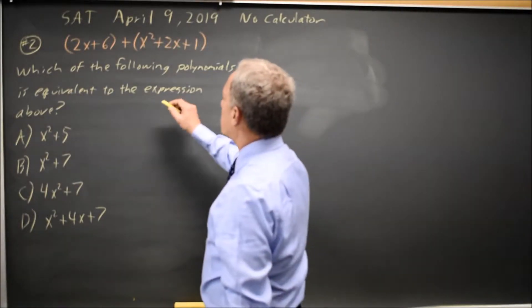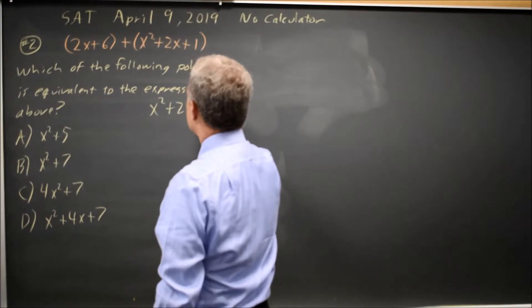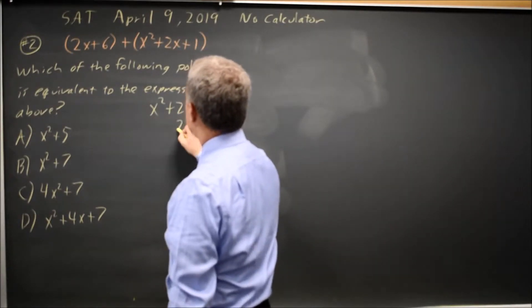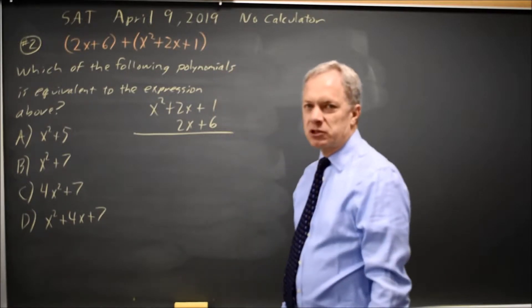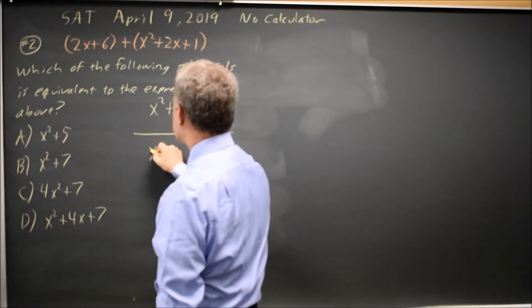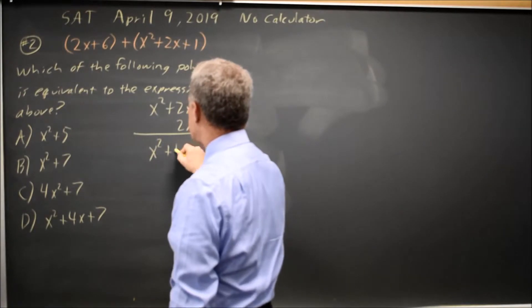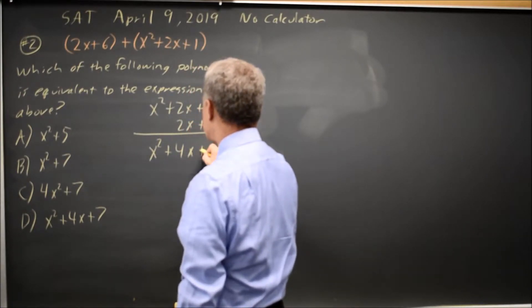In this case, we have x squared plus 2x plus 1, and we're adding 2x plus 6. I like to write polynomials for column addition because then I don't get lost. x squared plus 2x plus 2x is 4x, 1 plus 6 is plus 7.